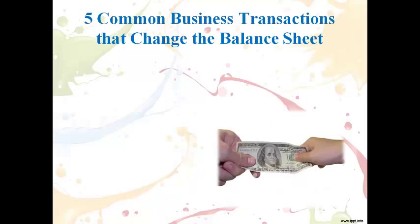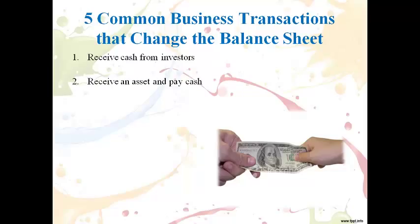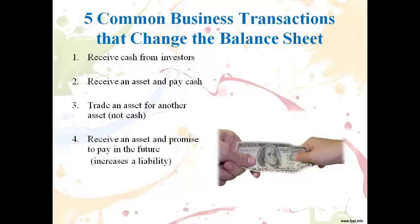There are five common business transactions that change the balance sheet. The first transaction that generally happens is cash is received from investors. This allows the company to use the cash to buy other assets. Assets can also be traded for other assets, such as a truck for equipment. An asset can be purchased on account or with a notes payable, and payment will be made later. Cash is also used to reduce what is owed on accounts payable or notes payable.